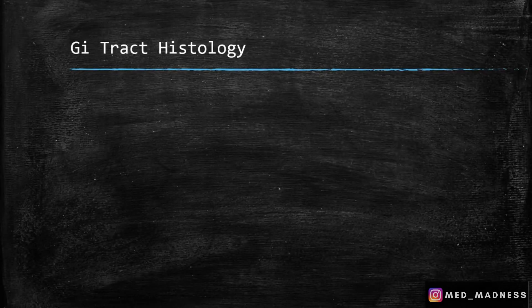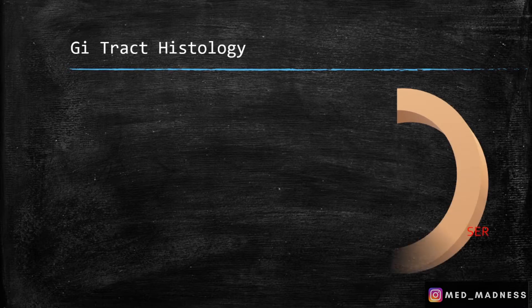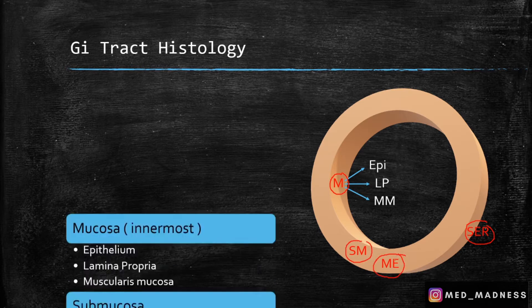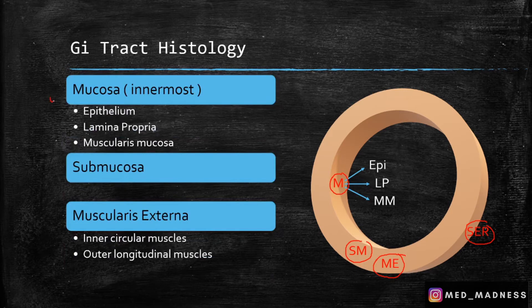Hi, this is Dr. Ram from Edmanus. In this session we are going to see about intestine histology. Before that, let's get oriented. I have represented the GI wall here — you can see the four layers of a GI wall. The innermost is the mucosa and outermost is the serosa, and in between we have the submucosa and muscularis externa.